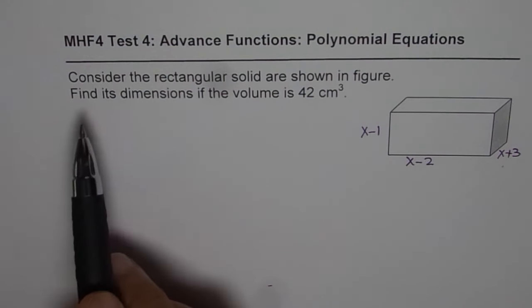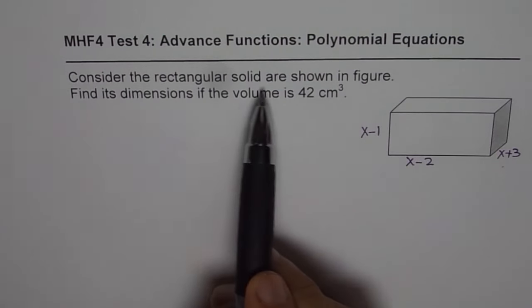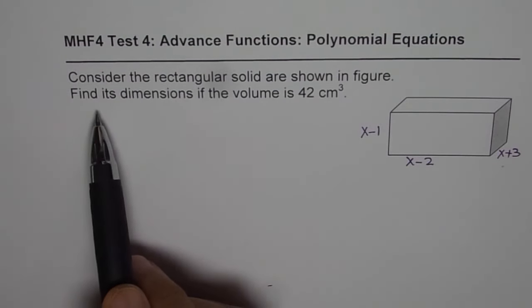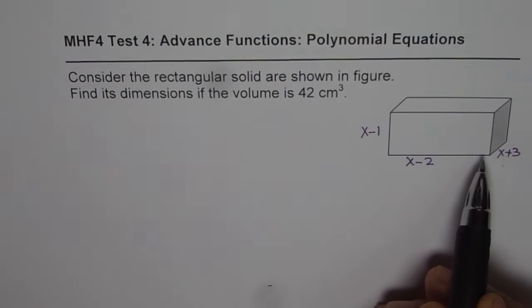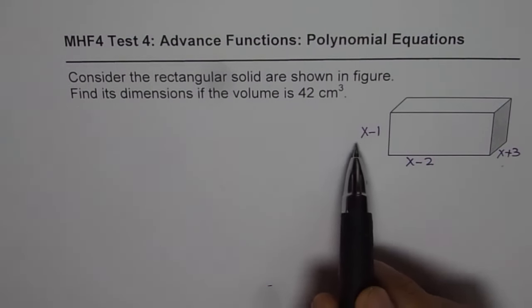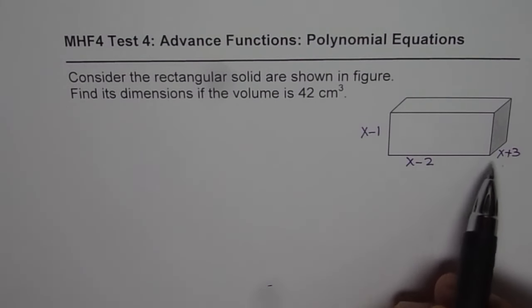The question here is: consider the rectangular solid as shown in the figure, find its dimensions if the volume is 42 cm³. That's the rectangular cube whose dimensions are x minus 1, x minus 2, and x plus 3.